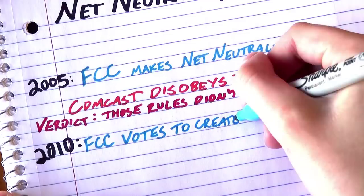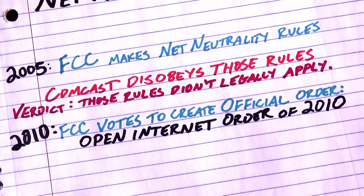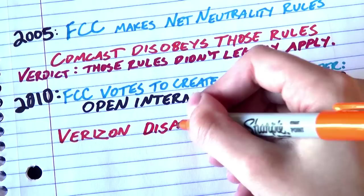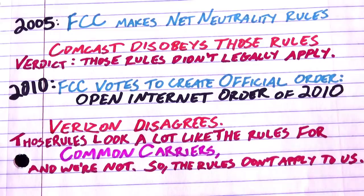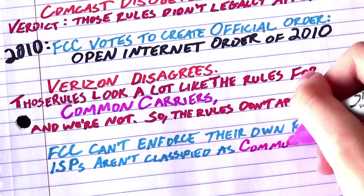And Verizon took the FCC to court and was like, are you sure those rules are for us? Because they look a lot like the rules for common carriers and we're not common carriers. So we're thinking those rules don't apply to us. And Verizon won. So if the FCC can't enforce their own rules because ISPs aren't classified as common carriers, a lot of people think that the FCC's next move should be to classify ISPs as common carriers.